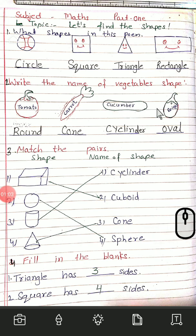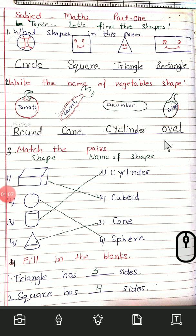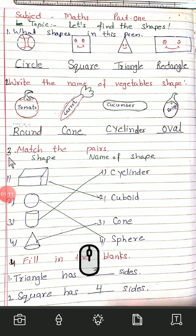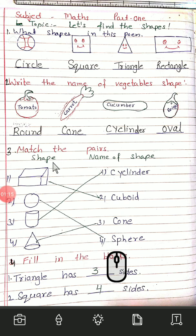Brinjal — Brinjal is oval shape. O-V-A-L. Oval. Third one: Match the pairs — Shape name of shapes.